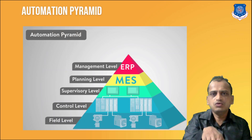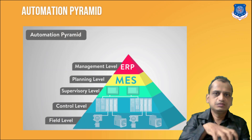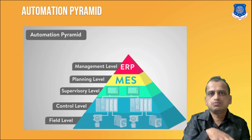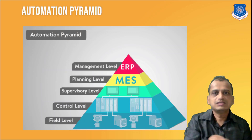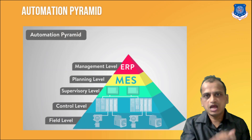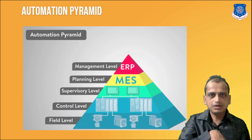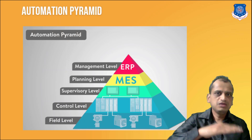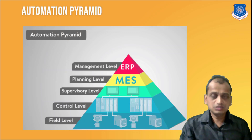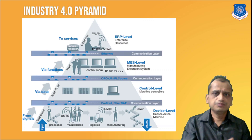At the planning level, Manufacturing Execution Systems (MES) gather data, which is fed to the Enterprise Resource Planning (ERP) system — for example, SAP, which is extensively used in manufacturing industries. ERP integrates all activities, processes, and operations happening within the manufacturing unit. This is the whole framework of how a company operates, from day-to-day manufacturing up through the different levels. This is the typical automation pyramid.